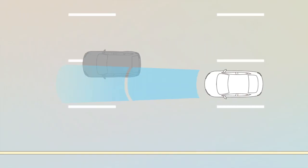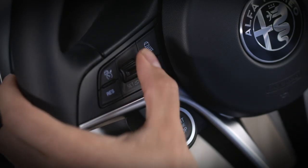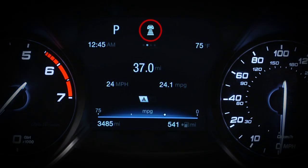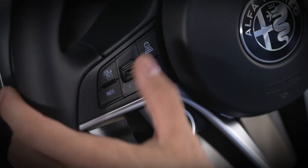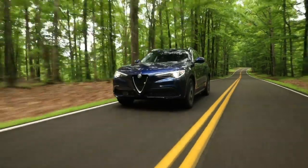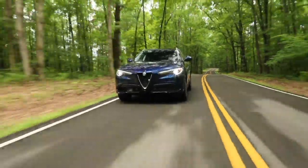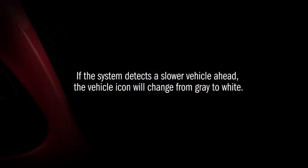Now let's look at the adaptive part of adaptive cruise control. When set distance is engaged, you'll see the set distance icon in your instrument cluster. The system defaults to the maximum distance setting. Each time you push the distance button, the distance setting will decrease until it cycles back to the maximum setting. The last used distance setting will be stored when the system is turned off and recalled when it's turned back on again. If the system detects a slower vehicle ahead, the vehicle icon will change from grey to white.